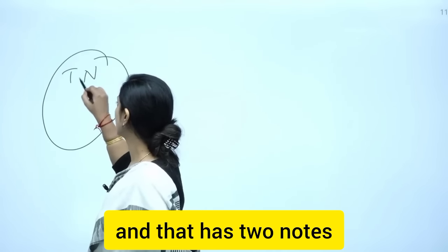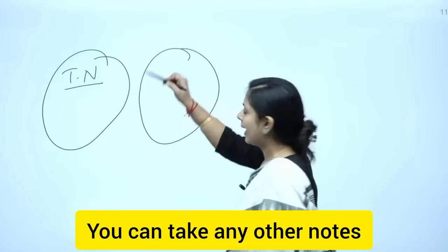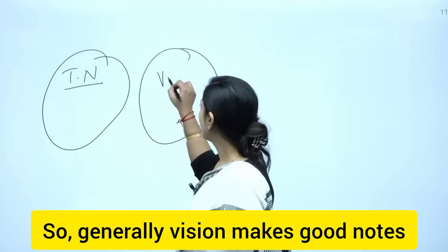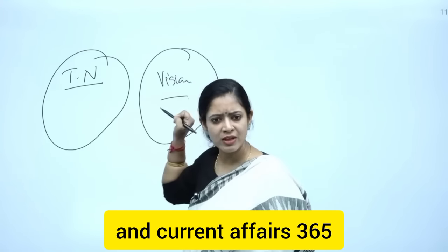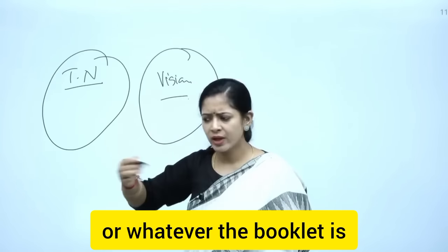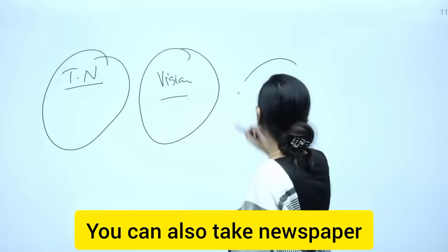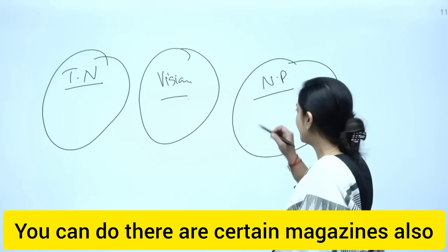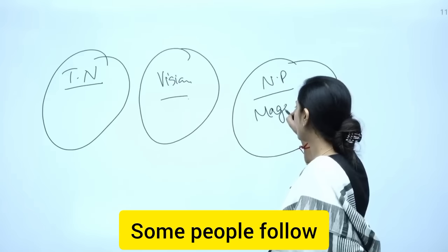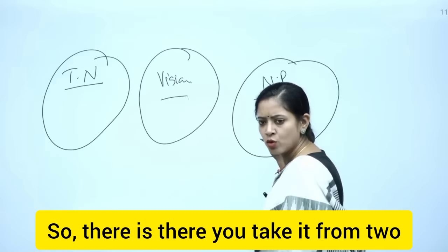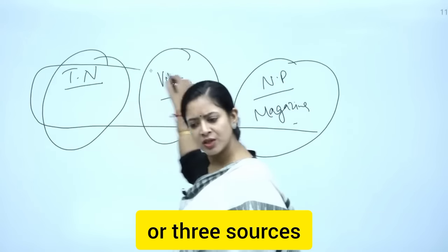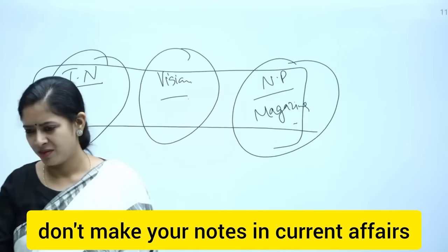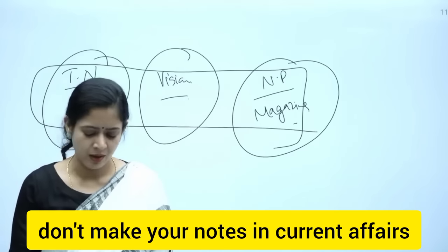After those two notes, you can take any other notes which are faring good in the market. Generally, Vision makes good notes, Current Affairs 365, or whatever the booklet is, that is also good. You can also take newspapers, magazine reading. Some people follow these. Take it from two or three sources and then make your notes.